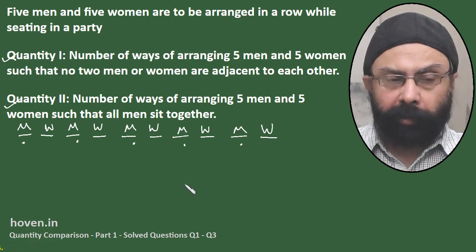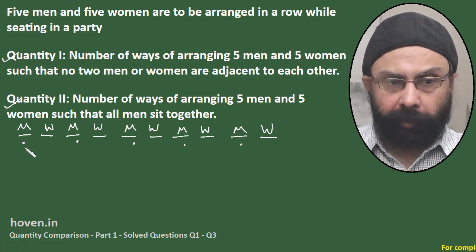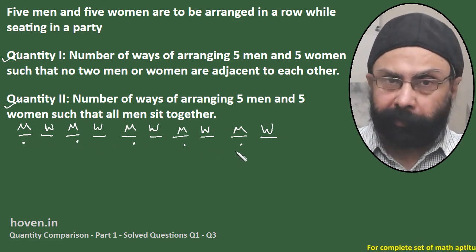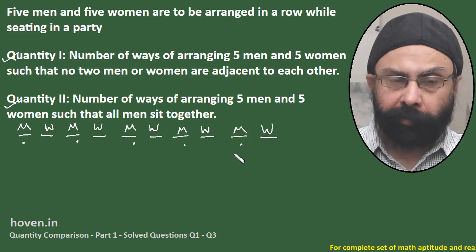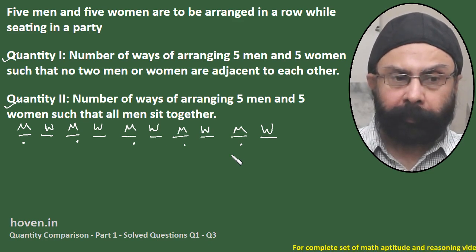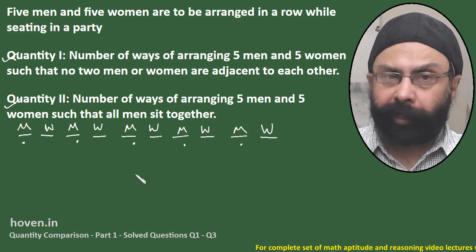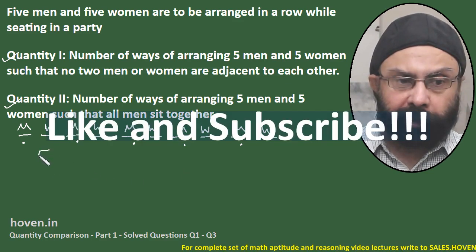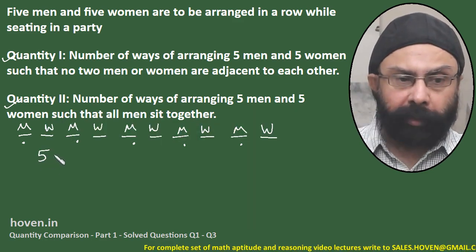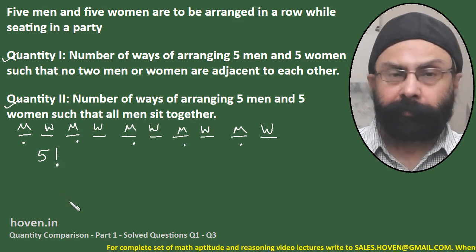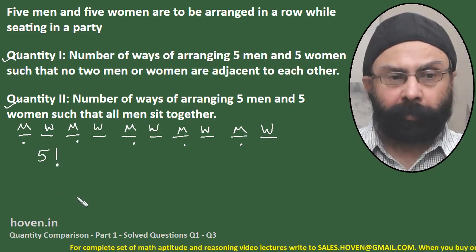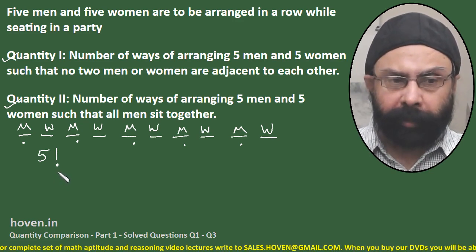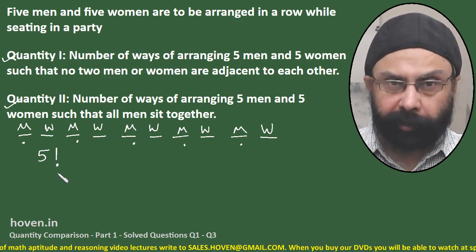Basically, there are 5 positions for men. In how many ways can we seat the men? From permutations and combinations, the answer is 5 factorial. Let us verify this: the first position can be filled by 5 men, then 4, then 3, then 2, then 1.